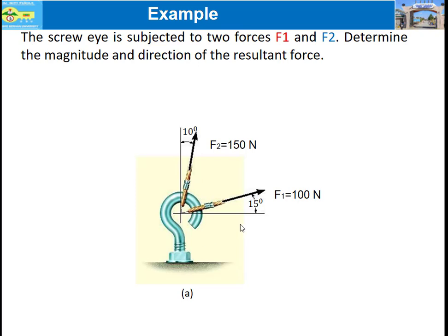As we can see in this figure, the screw is subjected to F1 which is 100 Newtons and F2 which is 150 Newtons. The angle between the horizontal x-axis and F1 is 15 degrees, and the angle between F2 and the vertical y-axis is 10 degrees.